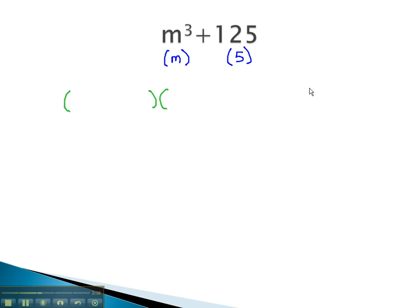We know this will factor to a binomial and trinomial factor. The binomial, we simply plug in the roots, m and 5. To fill in the trinomial, we square the first root, m², multiply them together, 5m, and square the last root. 5² is 25.